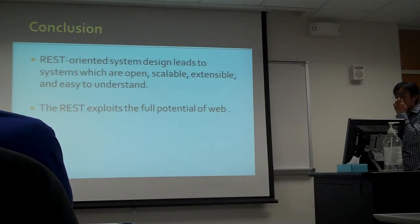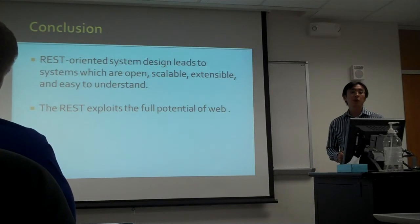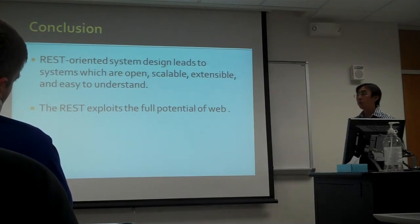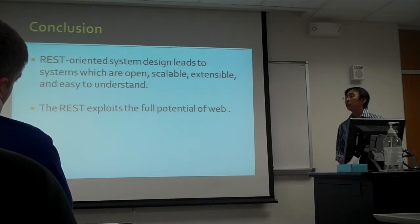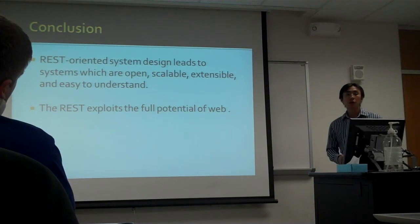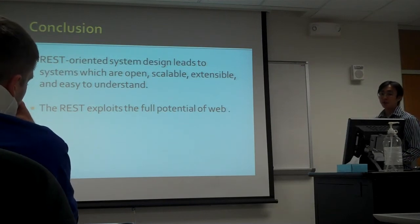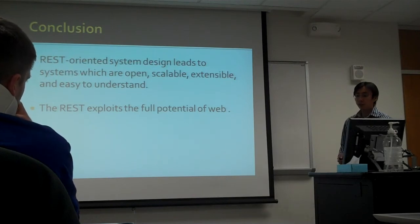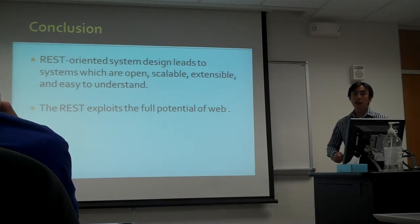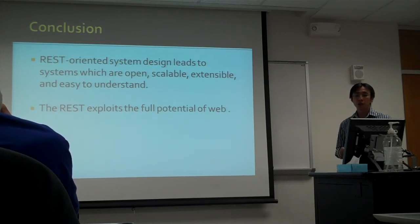Conclusion. REST-oriented service design leads to systems which are open, scalable, extensible, and easy to understand. Open means it allows new functionality to be introduced. Scalable means it does not contain a bottleneck. Extensible means the system can evolve without redesigning existing parts. REST exploits the full potential of the web by using existing web standards and adding constraints to ensure the modeling is sound.